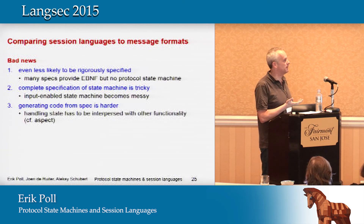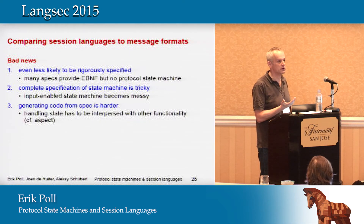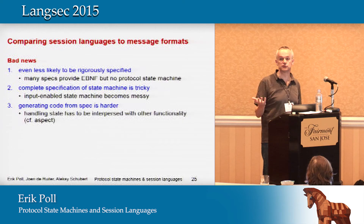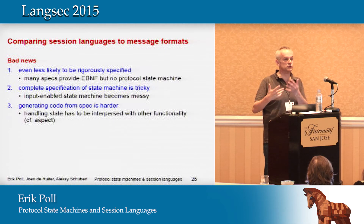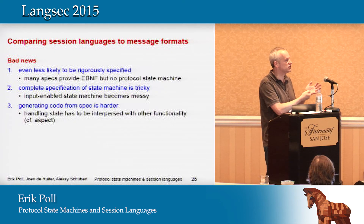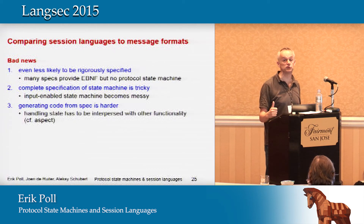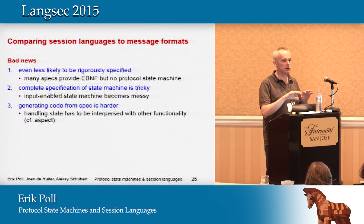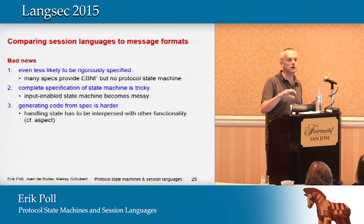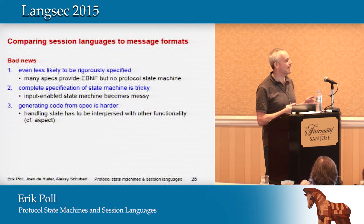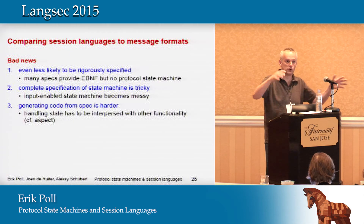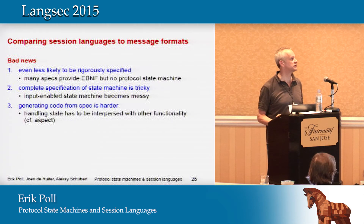Generating code from session languages is more difficult. It's trivial to spit out code from an EBNF grammar. If you have a state machine you could also generate code, but this code still has to be merged with existing code, because there is more to handling a session than just determining what type of input messages you have. If you have aspect orientation, you might factor out the state machine as a separate aspect, but in general you'll need a scattershot approach with different pieces of code handling this at various places.